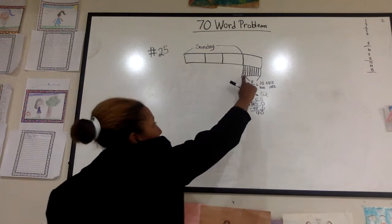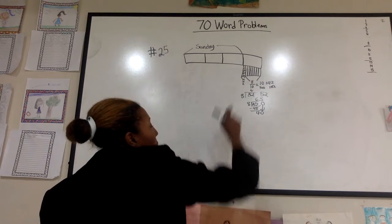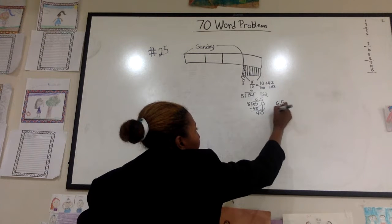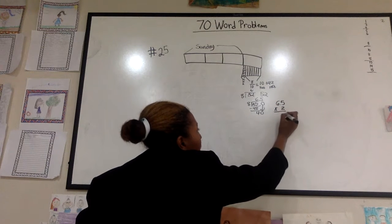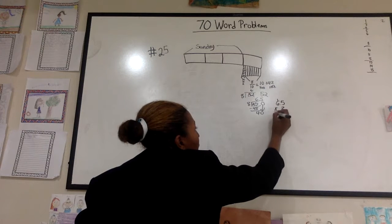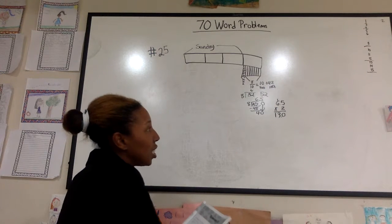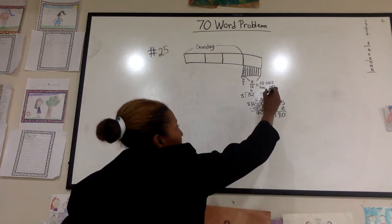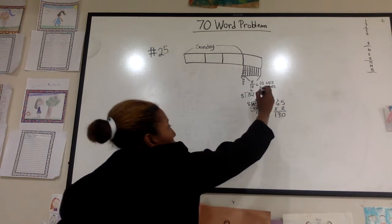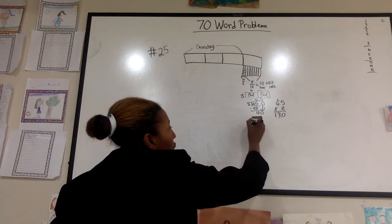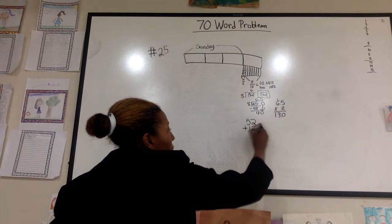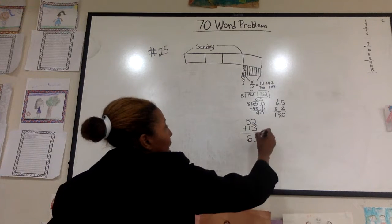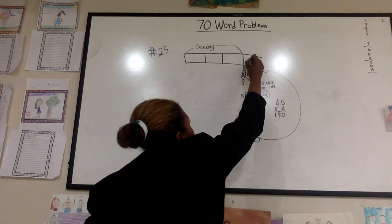So therefore, that means this box is 6.5, this box is 6.5. So 6.5 on Monday times two, because he read two of the boxes, is 13 pages that he read on Monday. So now we know he read 52 between Tuesday and the leftover, plus the 13, means 65 pages equals this box.